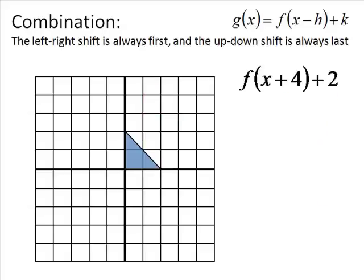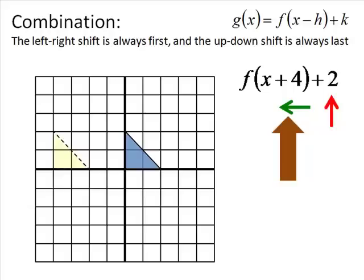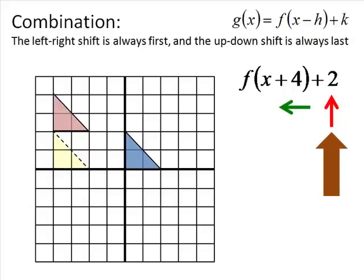Let's try another one with the same triangle: f(x + 4) + 2. The left-right shift is on the inside of the parentheses, so we do that first. Plus 4 means we go left — this is the backwards one; plus 4 goes to the left. Then we do the plus 2 on the end, which is our up-down shift, and since it's plus 2 we go up. So we go to the left 4, then up 2. The pink triangle is our final position.